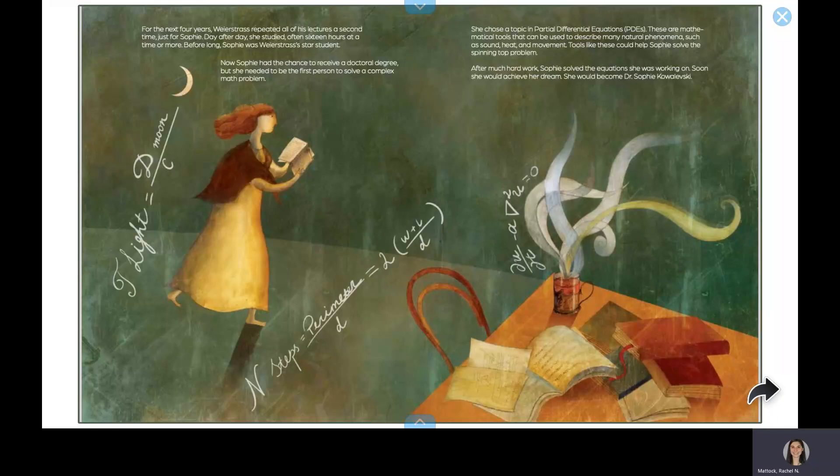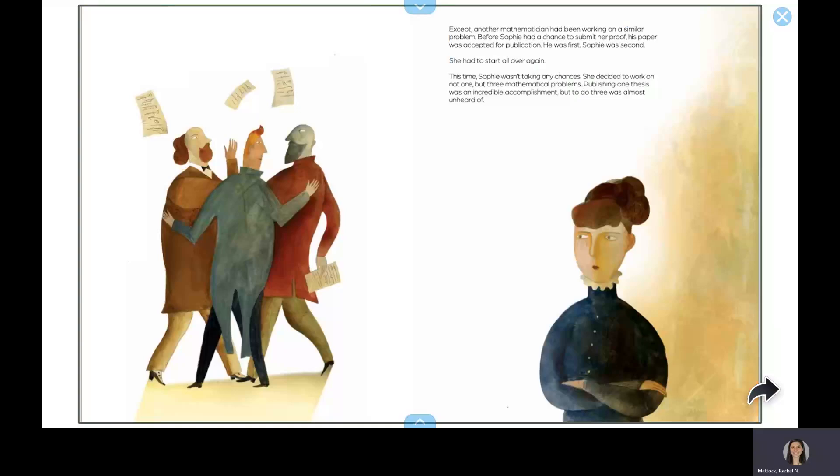After much hard work, Sophie solved the equation she was working on. Soon, she would achieve her dream. She would become Dr. Sophie Kowlewski. Except, another mathematician had been working on a similar problem. Before Sophie had a chance to submit her proof, his paper was accepted for publication. He was first. Sophie was second. She had to start all over again.